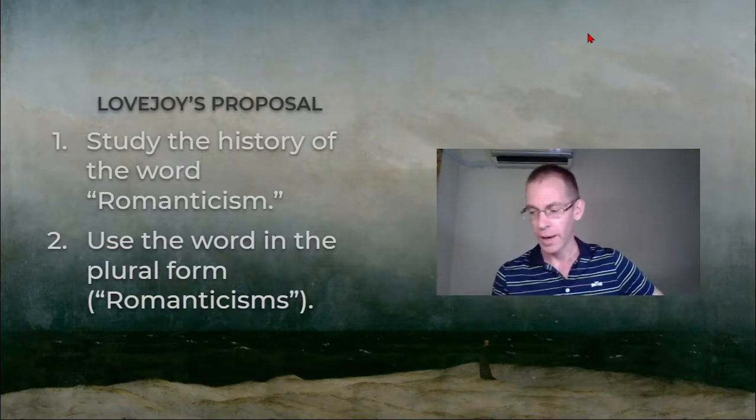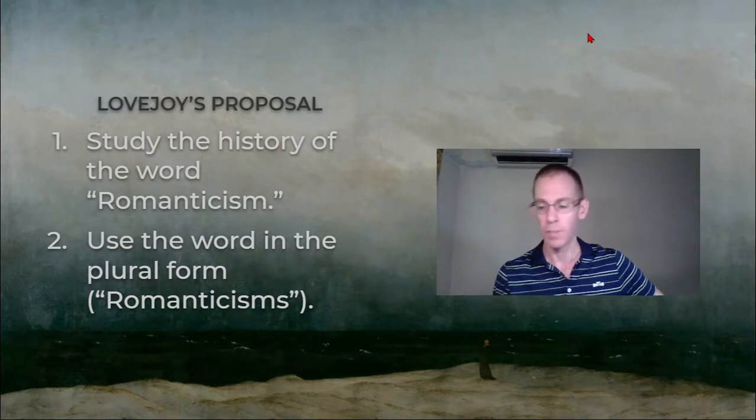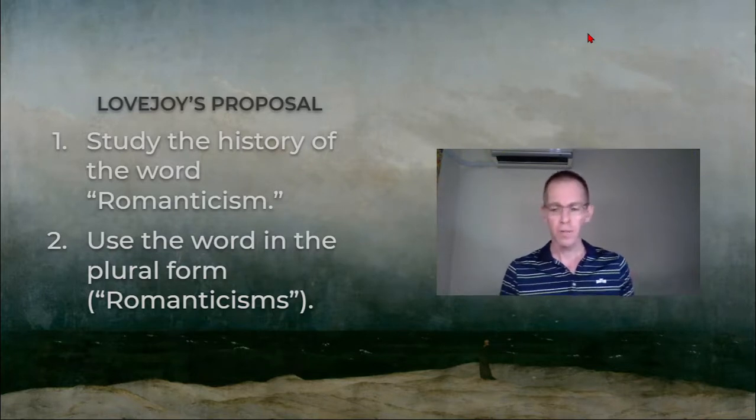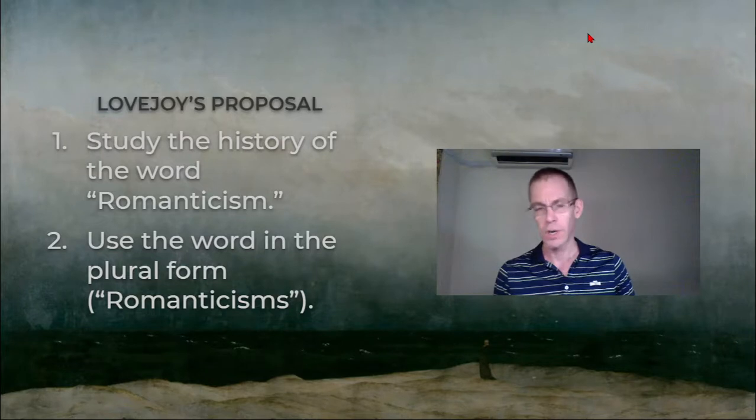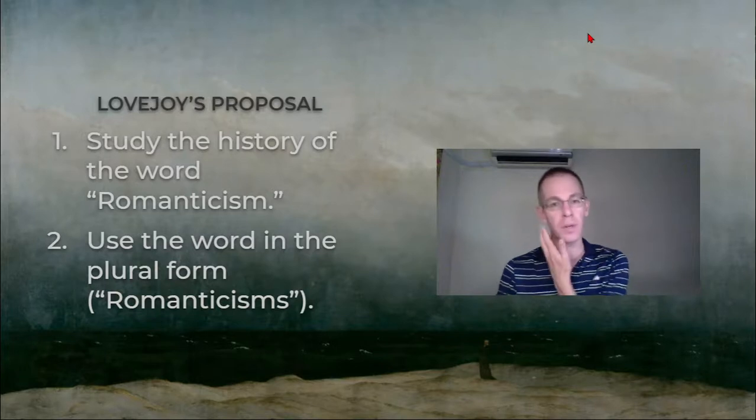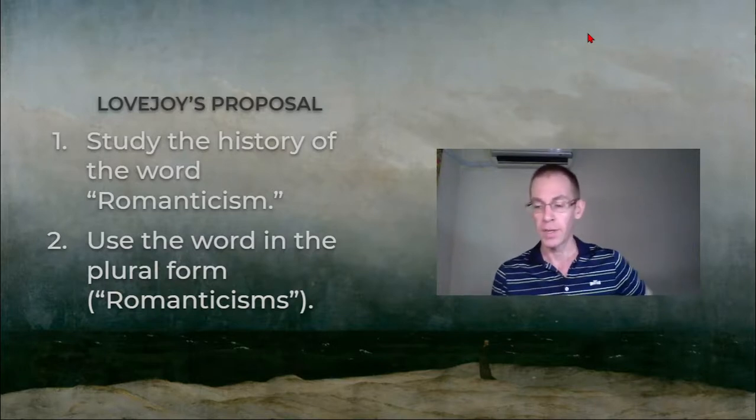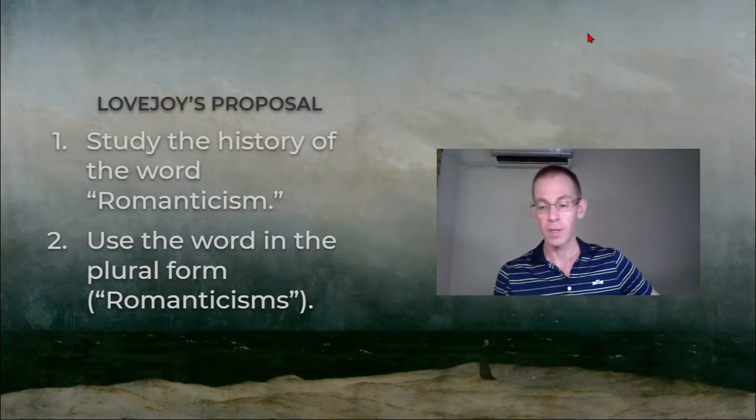And we'll look at some of this in a moment. Lovejoy does some of this work in his essay by comparing German romanticism—this first essay that I'm talking about, 'On the Discrimination of Romanticisms.' In that essay he compares the German romanticism of the 1790s with a romanticism from earlier in the 18th century.